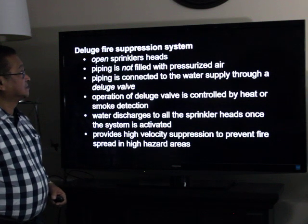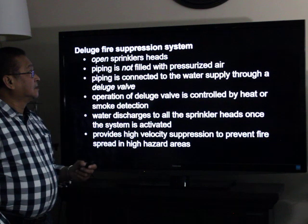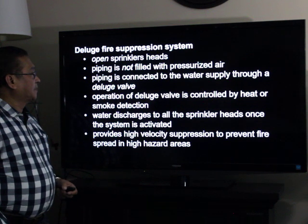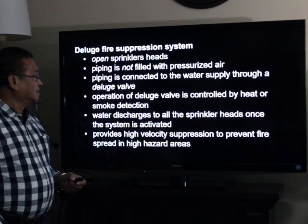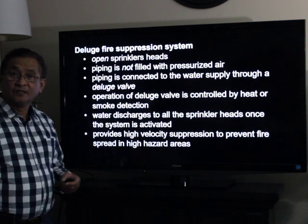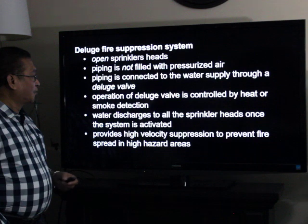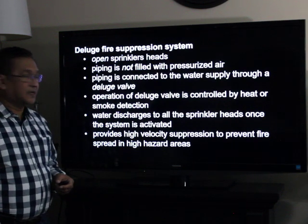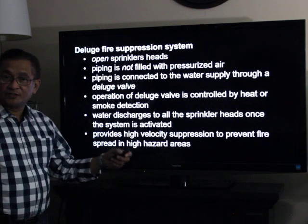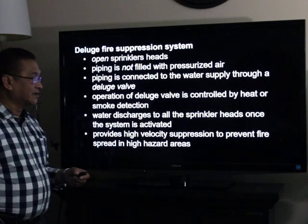The deluge fire suppression system is the only system having open sprinkler heads. The piping is not filled with pressurized air and is connected to the water supply through a deluge valve. The word 'deluge' comes from the meaning to inundate or to flood. Operation of the deluge valve is controlled by heat or smoke detection. Water discharges to all of the sprinkler heads once the system is activated, providing high-velocity suppression.